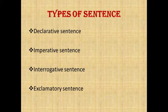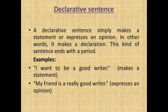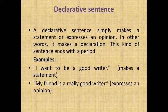First, we will discuss declarative sentences. A declarative sentence simply makes a statement or expresses an opinion. In other words, it makes a declaration. This kind of sentence ends with a period. For example: 'I want to be a good writer' makes a statement. 'My friend is a really good writer' expresses an opinion.